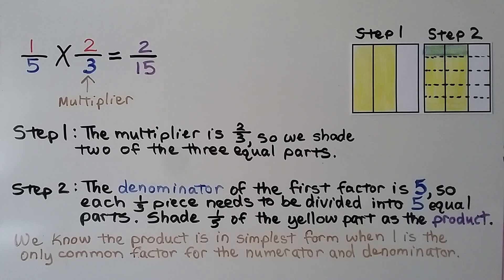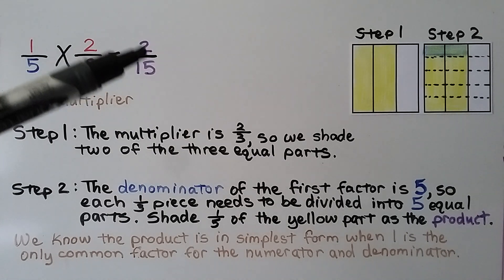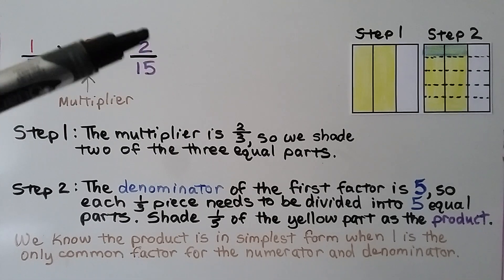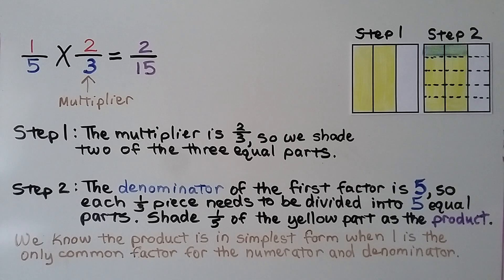The product is in its simplest form when one is the only common factor for the numerator and denominator. In this case, one is the only common factor, so two-fifteenths is already in simplest form.